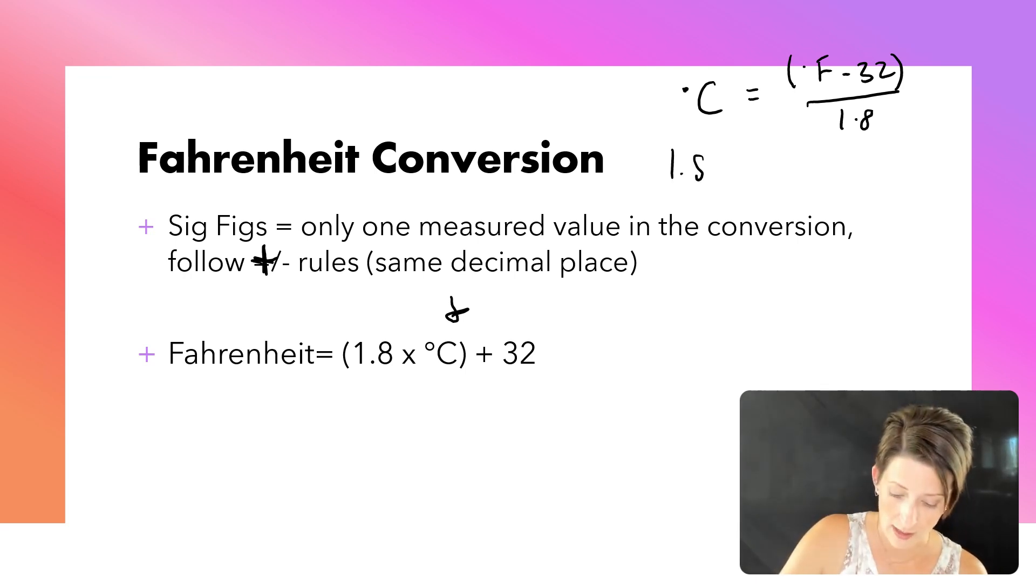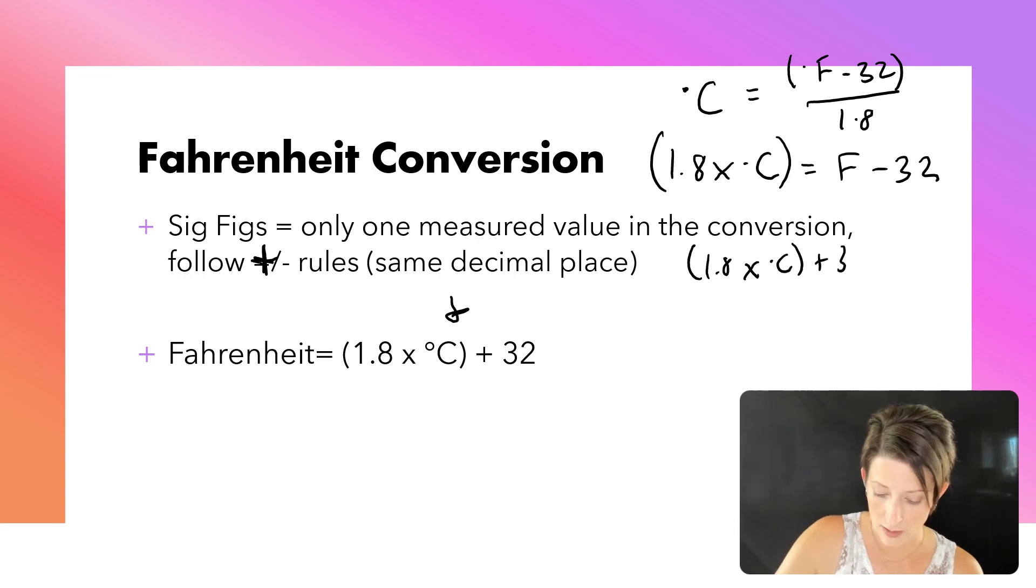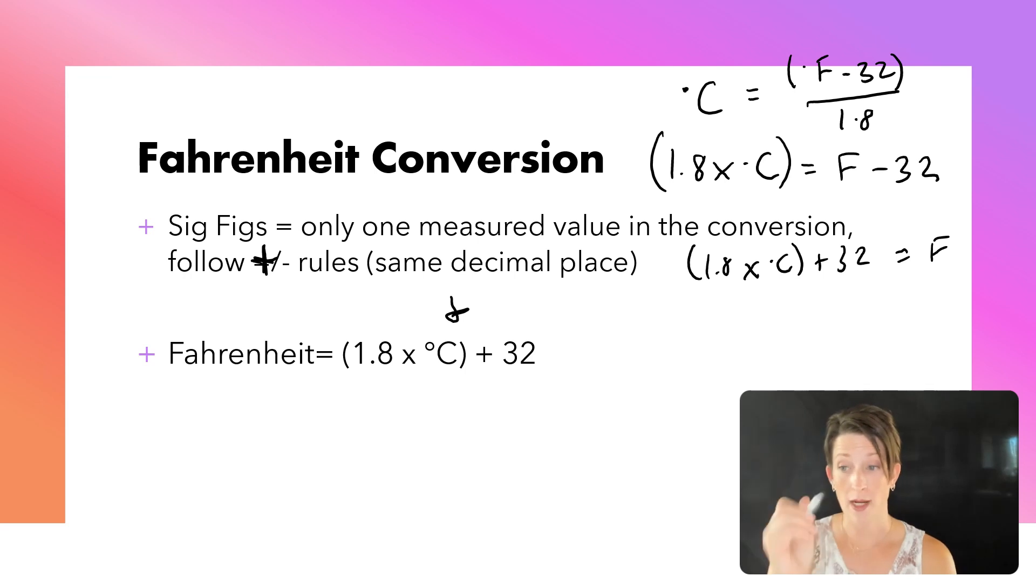Multiply by 1.8, and I have that Fahrenheit minus 32. And then I want to take that plus 32 equals Fahrenheit. So we can go back and forth. You do not need to memorize each equation separately. Know one of them, and you can go back to the other.